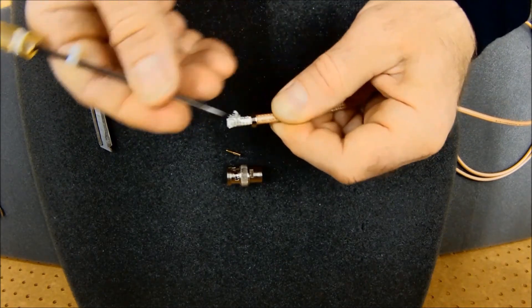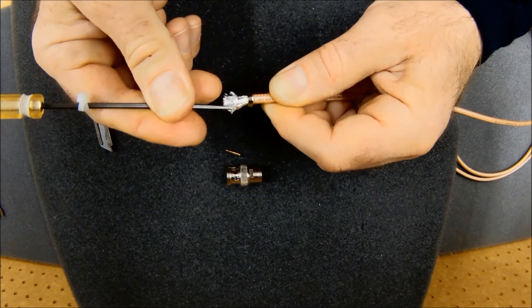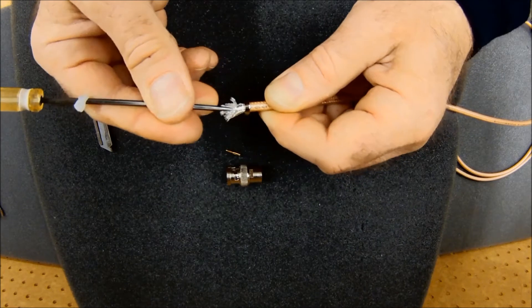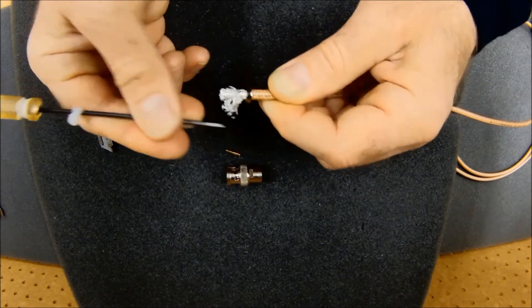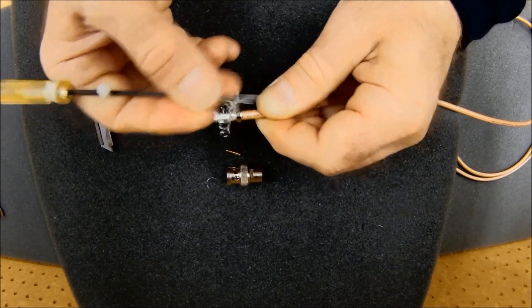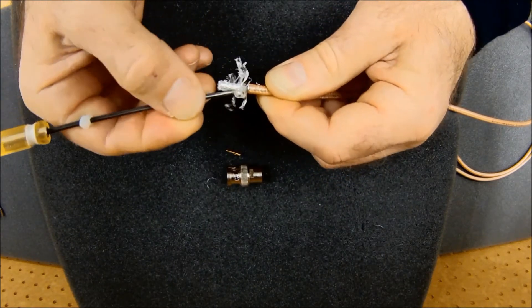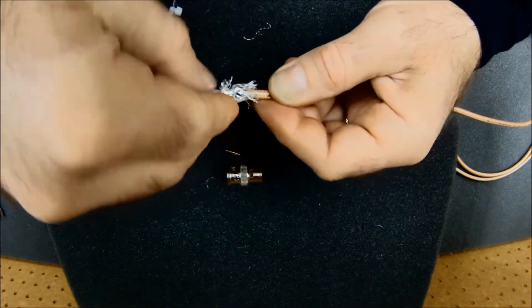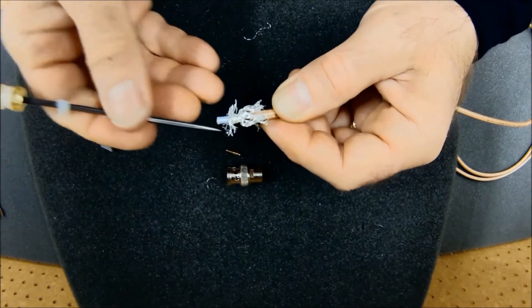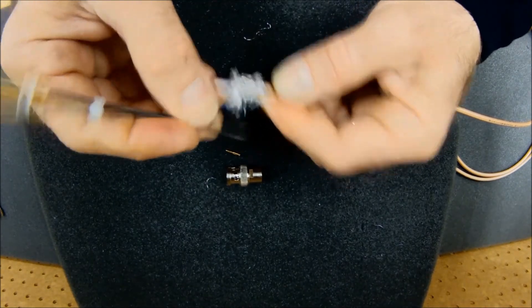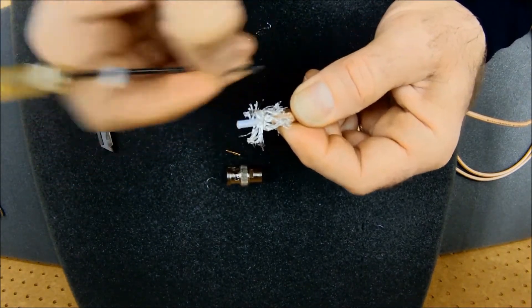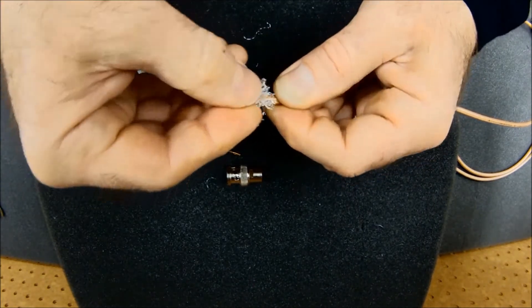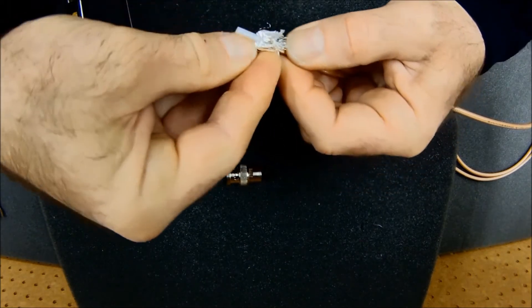Now I can use this probe to pull this back, unbraid this a little bit. Don't worry too much if a few strands break off. We've got a lot here to work with. I'm going to take both conductors and fold them right back over the top of this tapered washer. About like so.